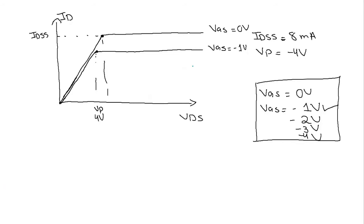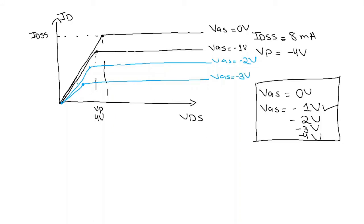This phenomenon keeps on progressing. For VGS equal to minus 2 volt, again we will have a linear graph and then reach saturation at lower values of VDS. Similarly at VGS equal to minus 3 volt, we will have further lower values of the pinch-off voltage and the saturation region. If you look at the curves, the saturation ID value is less at D than at C, less at C than at B, and B is less than A. Point A, which is the topmost curve, has the maximum ID which is IDSS.